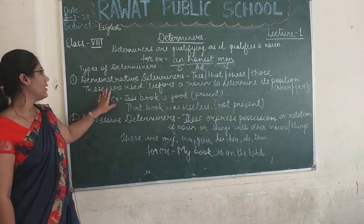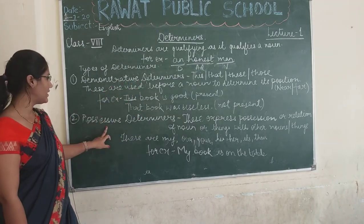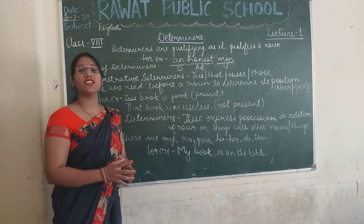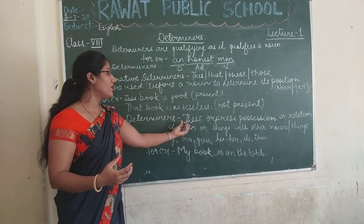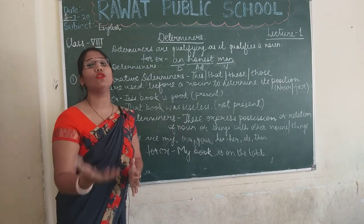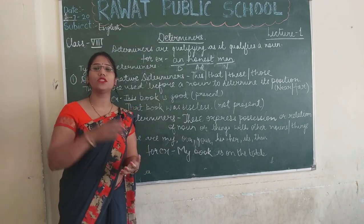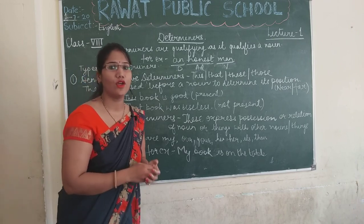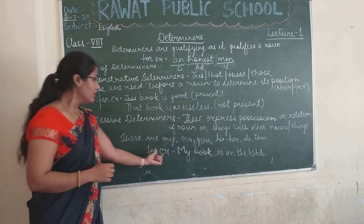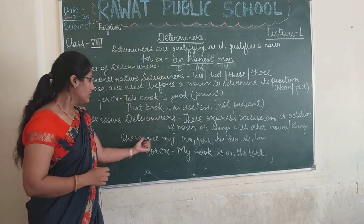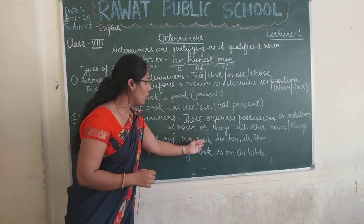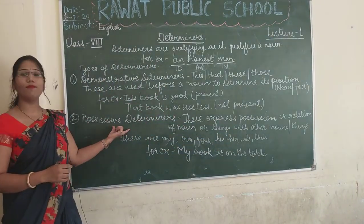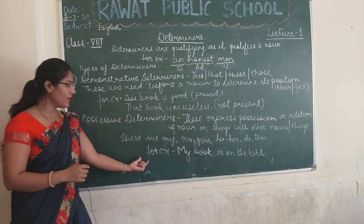Now the second type is possessive determiners. These express possession — the relation of a noun or thing with another noun or thing. Yeh ek noun se doosre noun ya kisi cheez ke saath humara relation batate hain. For example: my, our, your, his, her, its, and their are the examples of possessive determiners.